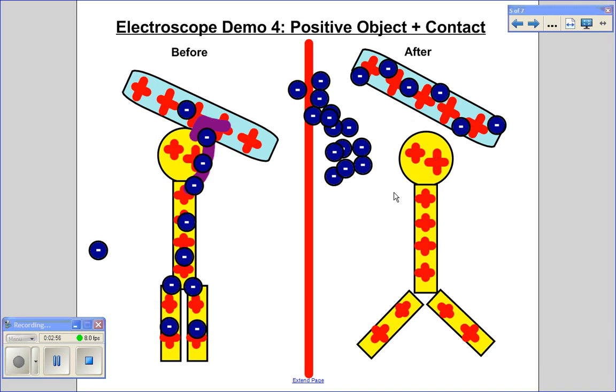Now over on the right side we want to show after. And you'll notice that we've got some electrons that have been transferred to the rod. And so what is left here on the electroscope are just a few of the electrons that were there beforehand.